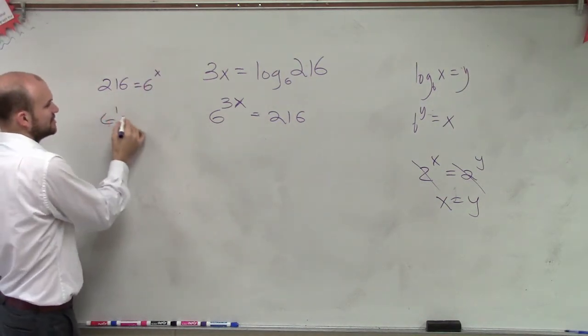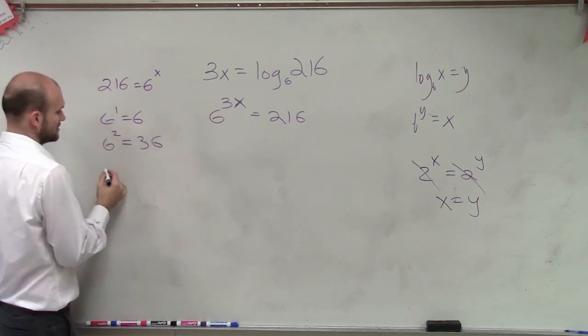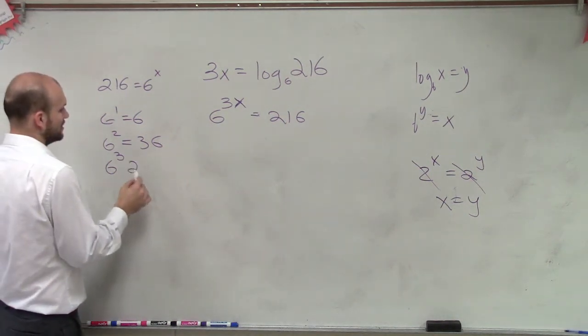So let's see. 6 to the first equals 6. 6 squared equals 36. 6 cubed equals 216.